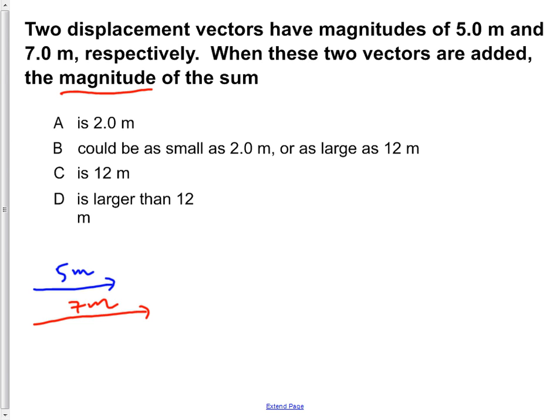So let's just start drawing some out. If we do, say, 7 meters to the east, and then we do 5 meters to the west, we would have a resultant vector of 2 meters.